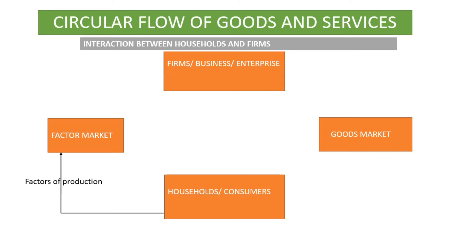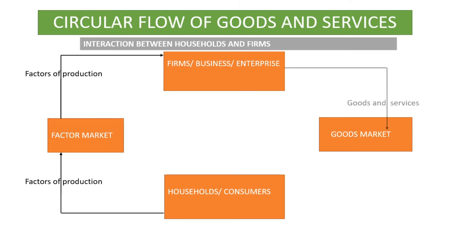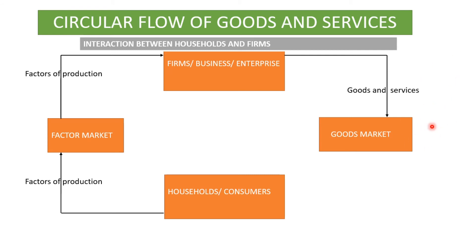The households are the owners — they are primary participants. They are the owners of the factors of production. So they sell the factors of production in the factor market. The businesses convert the factors of production and make the goods and services, which they sell in the goods and services market.